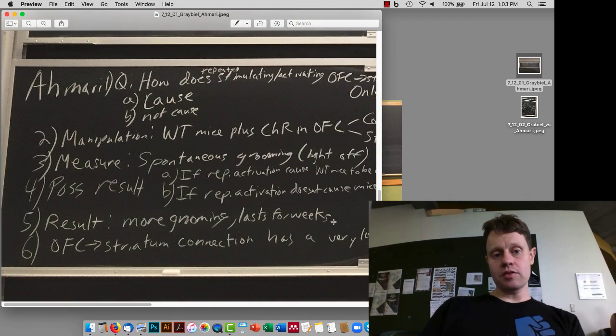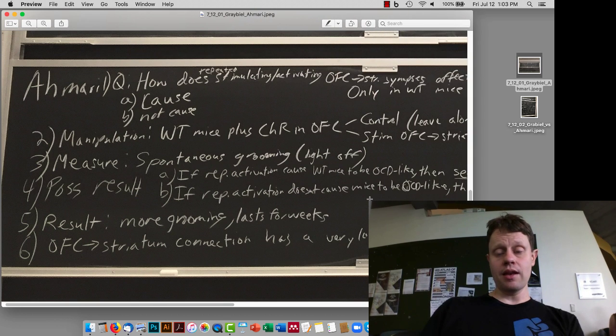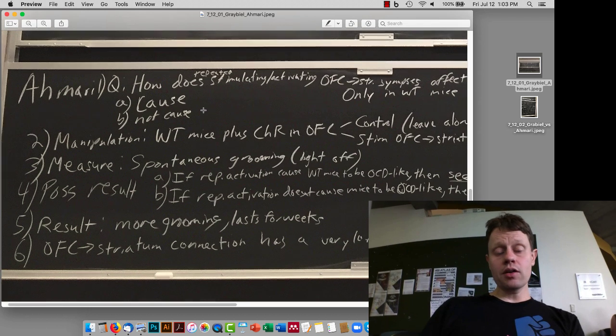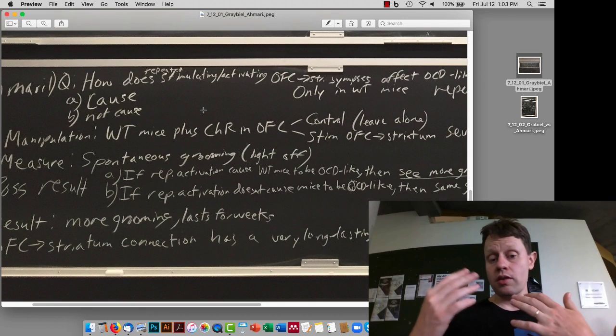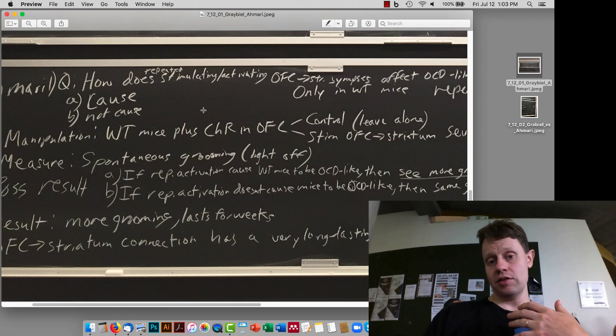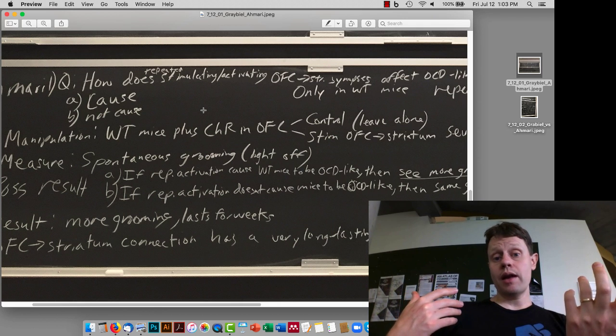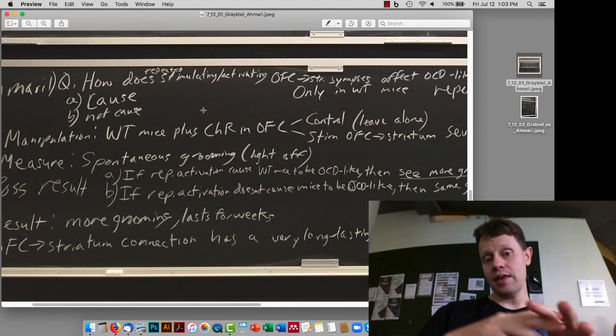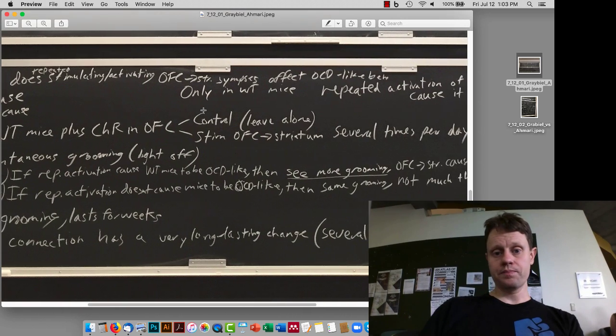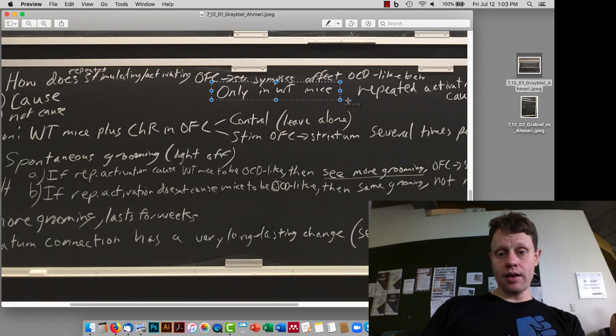The second paper we talked about was the Susanna Mari paper. They started this work before Angrabial's work was published around the same time, and then they actually did a publishing at the same time because they learned about each other's work. Here they were interested in, again, drawing on the Welch paper, knowing that striatum inputs are interesting, and also the Chamberlain paper, OFC is different. They wanted to see what happens if we take a normal mouse and we just stimulate the heck out of the orbital frontal cortex to striatal synapses? How is that going to change their OCD-like behavior?